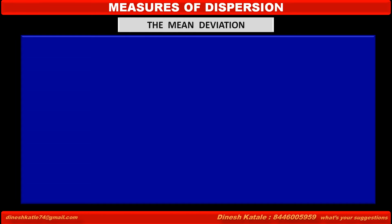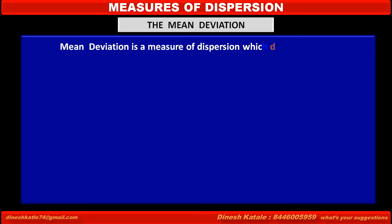Now, we have to learn the mean deviation. Mean deviation is a measure of dispersion which depends upon the deviations of the observations from a central value or average.